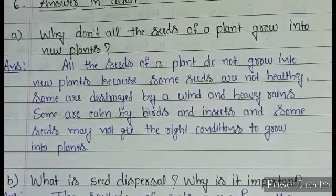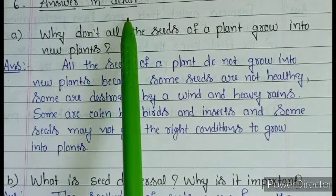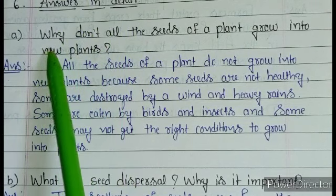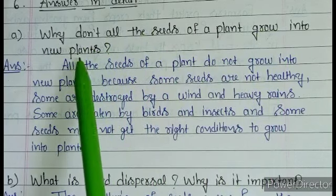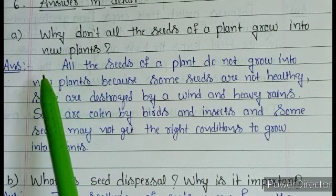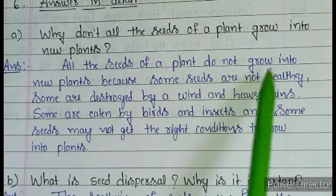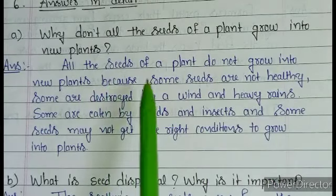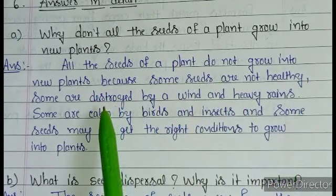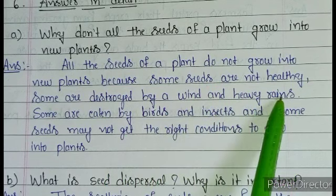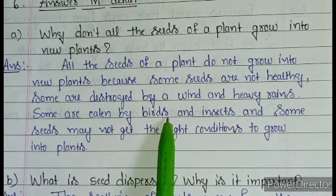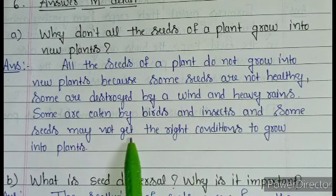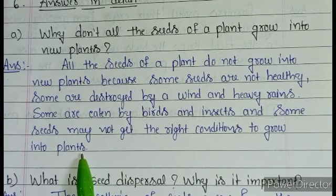In this chapter, the main answer in detail. Question A: why do not all the seeds of a plant grow into new plants? Answer: all the seeds of a plant do not grow into new plants because some seeds are not healthy, some are destroyed by wind and heavy rains, some are eaten by birds and insects, and some seeds may not get the right conditions to grow into new plants.